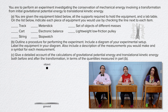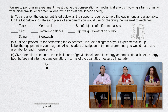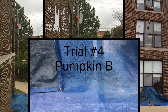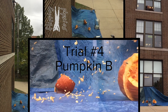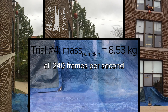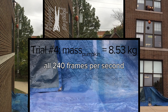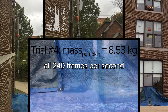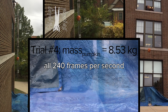Actually, we could just drop objects of known masses from known heights. That would also convert gravitational potential energy to kinetic energy. We pretty much did that when we dropped a pumpkin, although we did use a video camera to time the freefall instead of a stopwatch.